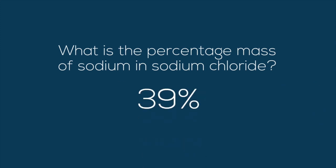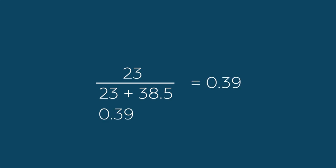Sodium makes 39% of the mass. We get that number by dividing 23 by the sum of 23 and 35.5, giving us 0.39, which we multiply by 100. Did you get that right?